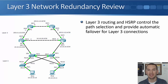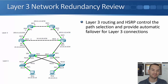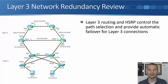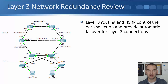At Layer 3, routing and HSRP control the path selection and provide automatic failover for our Layer 3 connections. You can see the network topology diagram here, which I'll be using throughout this section. The routers at the top — R1, R2, SP1, and SP2 — all have Layer 3 connections between them, as do R1 and R2 going down to PC1 and PC2. The switches CD1, CD2, and access layer switches Axis 3 and Axis 4 are Layer 2 only switches.